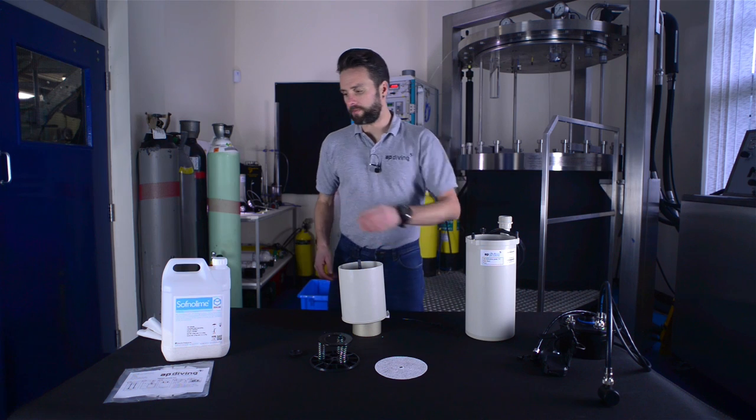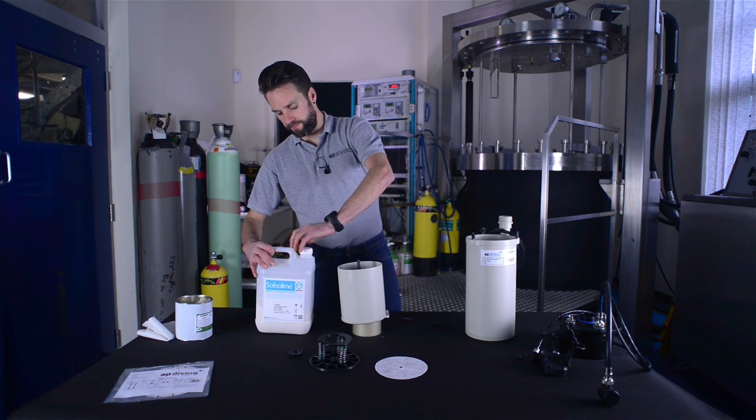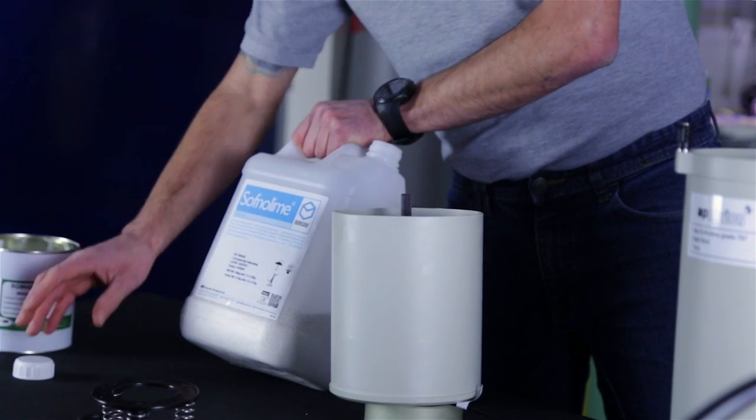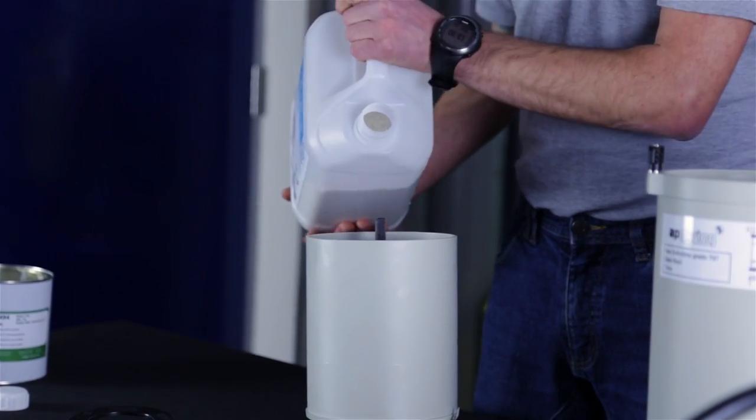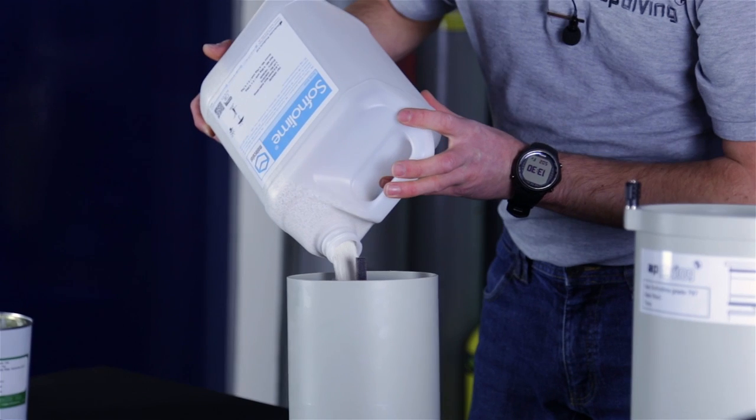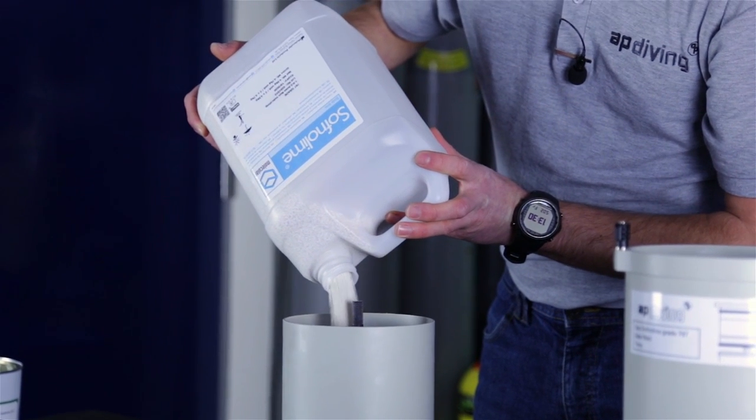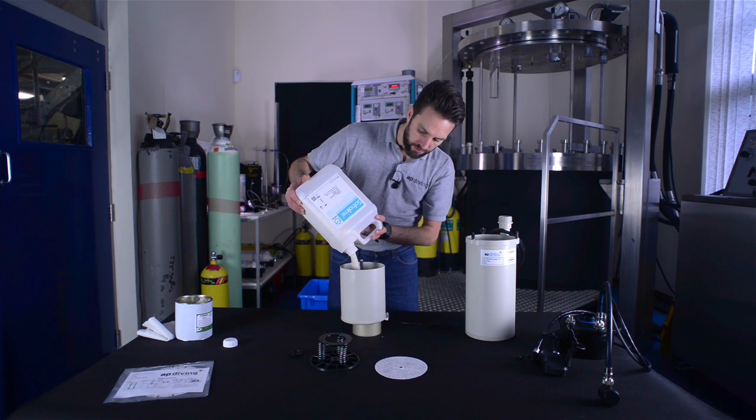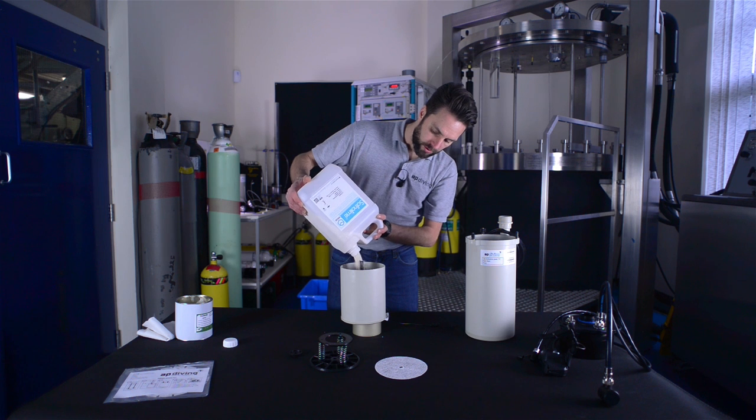Now we're ready to begin. Using soft lime 797, we're going to fill the cartridge out. I'm going to aim for the stem. Be careful not to breathe in any of the dust as it pours in.